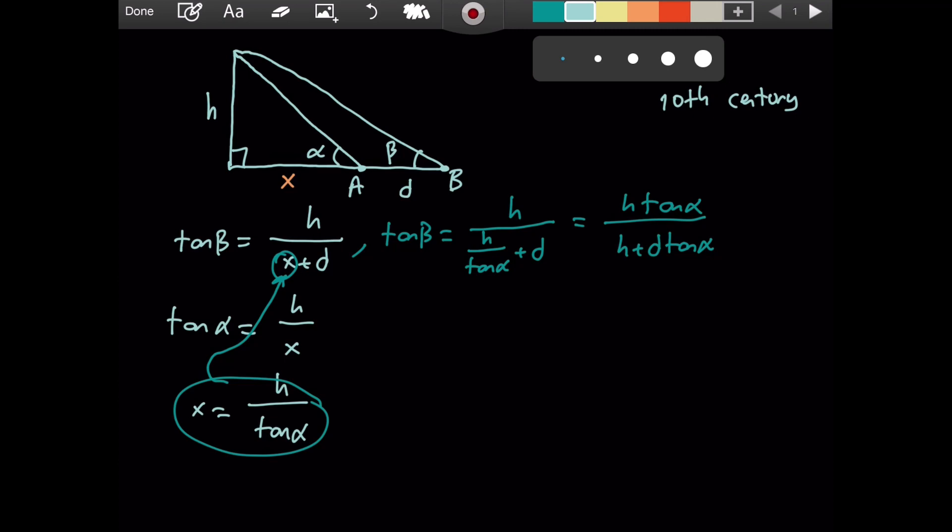Then, I want to solve for h. So, let me multiply both sides by this business to get h tangent of beta plus d tangent alpha tangent beta equaling h tangent alpha. As I said, I am looking for h. So, I subtract h tangent of beta from both sides. I have d tangent of alpha tangent of beta equaling h times tangent of alpha minus tangent of beta. And don't worry, this is a positive value because alpha is an angle that is greater than beta. And as angles increases in the first quadrant for angles between 0 and 90 degrees, tangent increases as well.